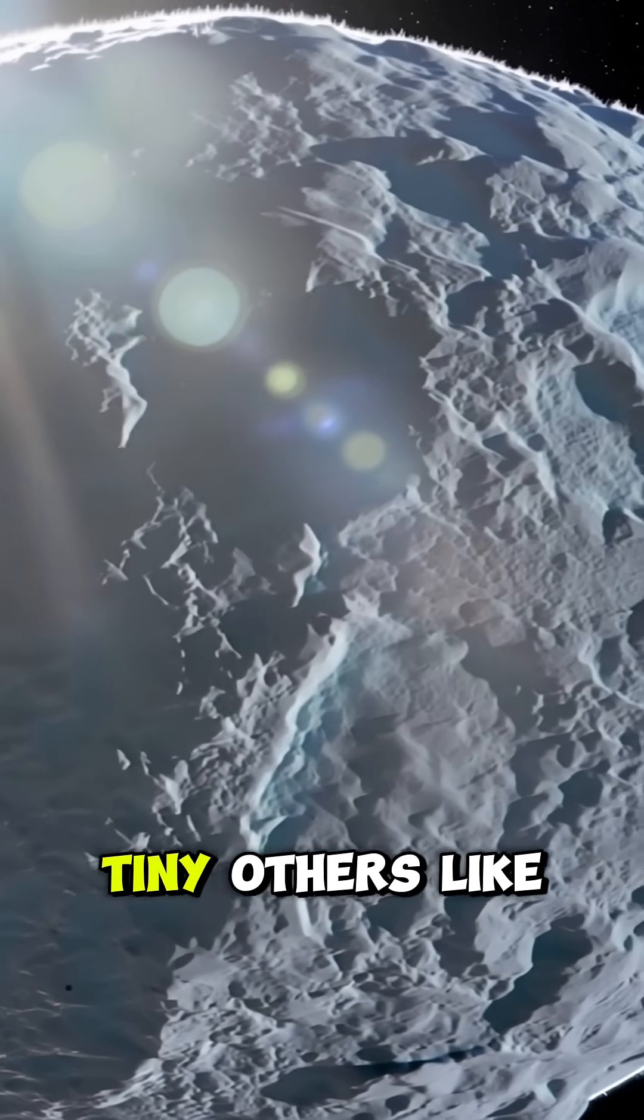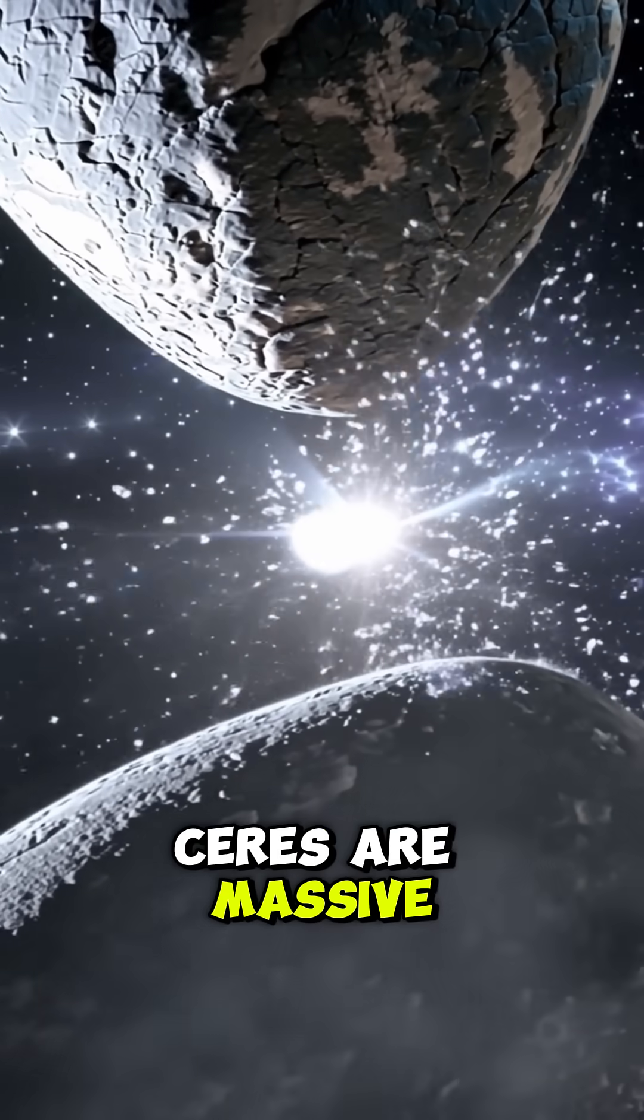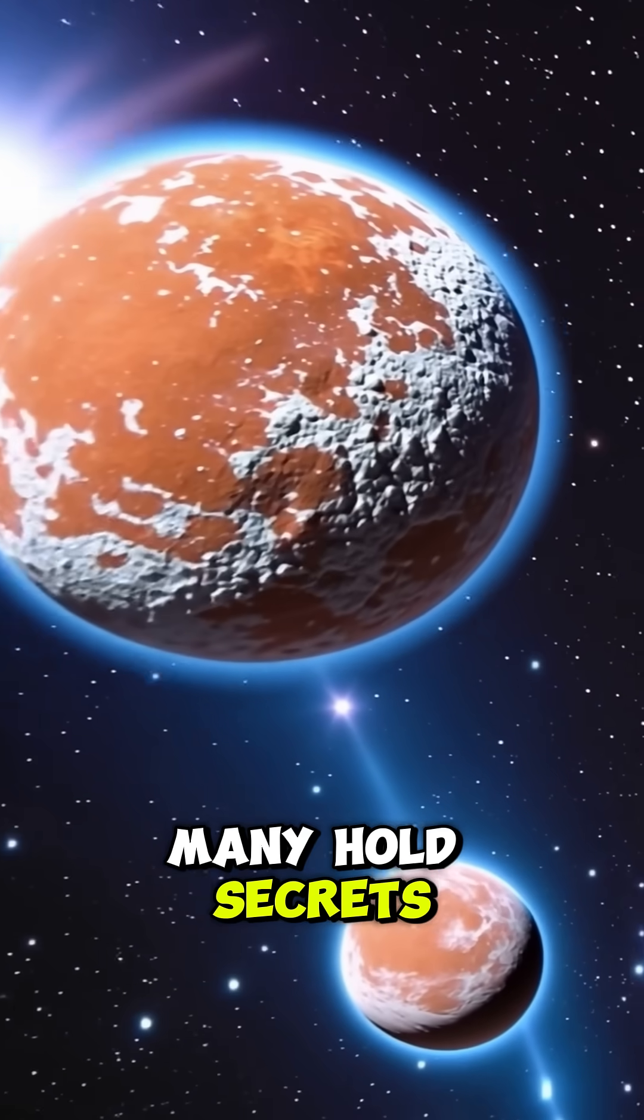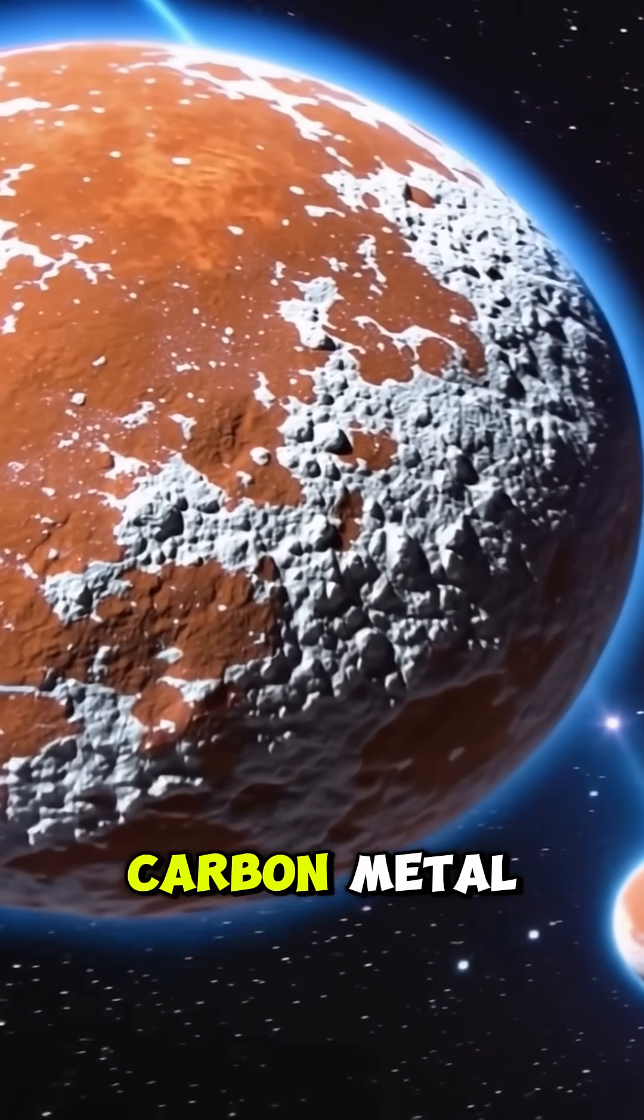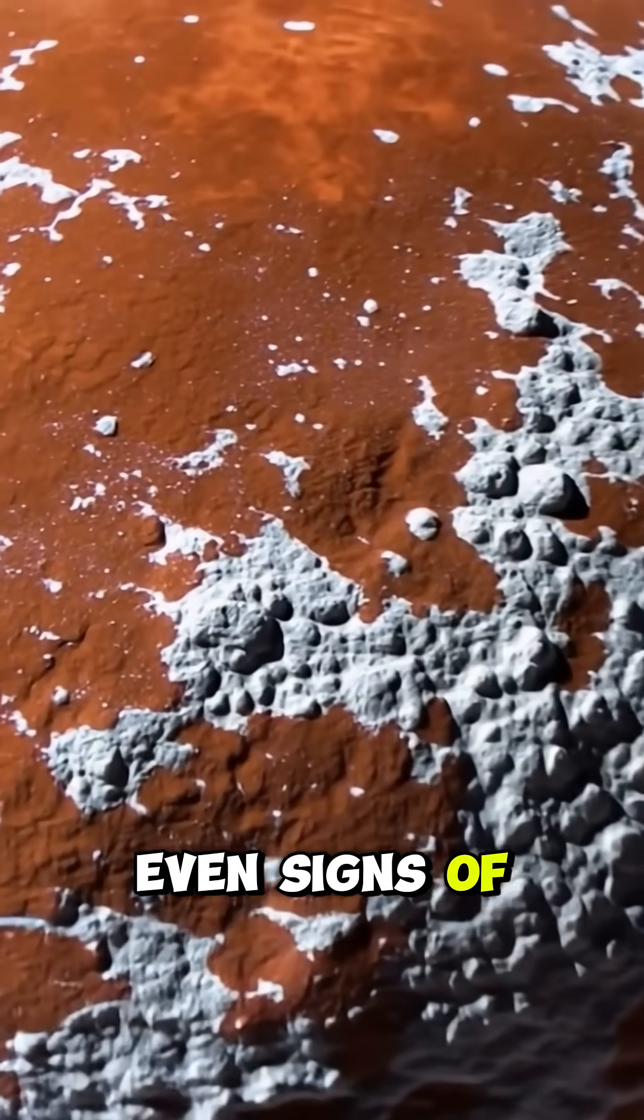Some asteroids are tiny, others like Ceres are massive, almost a dwarf planet. Many hold secrets from the dawn of the solar system: carbon, metal, even signs of ancient water.